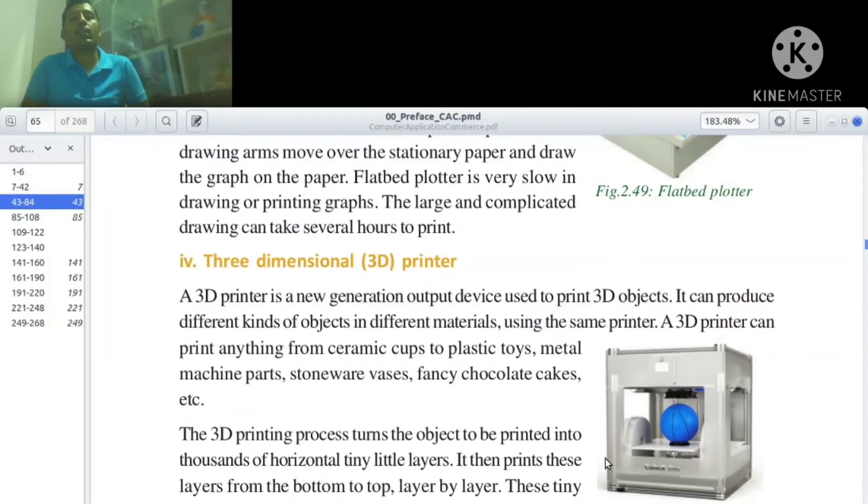The 3D printer can print anything from ceramic cups to plastic toys, metal machine parts, stoneware vases, fancy chocolate cakes, etc.